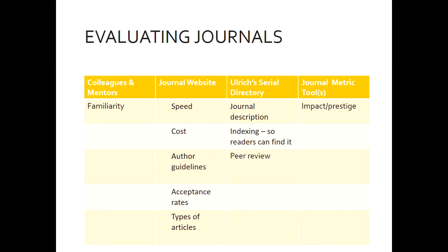You can also look for the journal description. There's a resource called Ulrich's Serial Directory, and it can give you a basic description of serials all over the world. You can also find out where the journal is indexed — in other words, when people are searching for articles, would they find yours? Is it located in PubMed, PsychInfo? You want it to be indexed in as many places as possible because that increases the likelihood of someone actually finding the article you published.